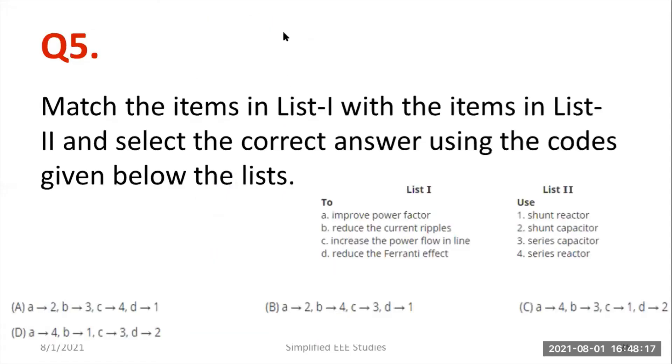So I wanted to discuss one more question. That's also very important. You can expect in gate level examination. Match the items in list one with the items in list two and select the correct answer using the codes given below in the list. So you can able to see list one and list two respectively. The list one we are having improved power factor, reduce the current ripple, increase the power flow in line, reduce the Ferranti effect. Next list comprises of shunt reactor, shunt capacitor, series capacitor, series reactor. So anyway, everybody knows that improved power factor, shunt capacitor is the right answer. So shunt capacitor definitely take and match. And also in order to reduce the Ferranti effect, what we are going to use, we are going to use the shunt reactor. That is also most popular to everyone. Now let us go through. So from this, these two options can be ignored at the spot. So among these two options, which is the right answer?